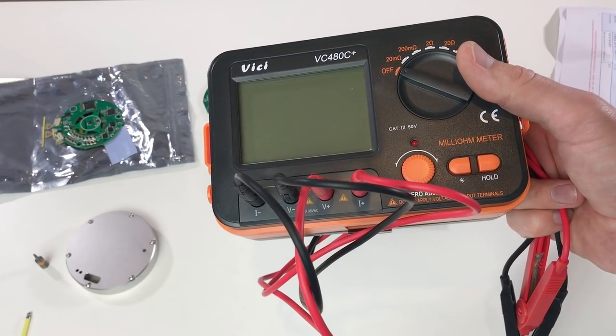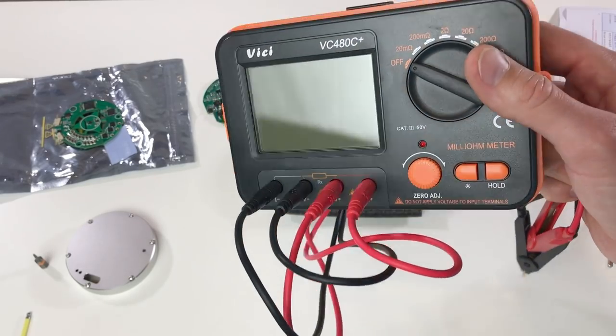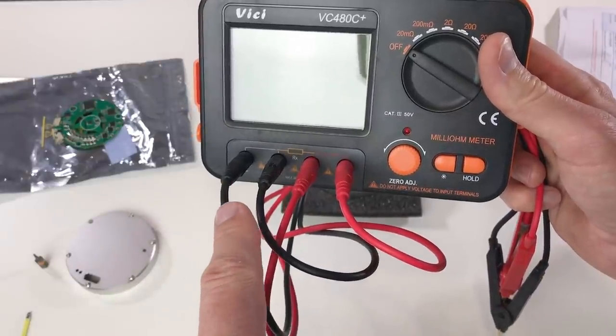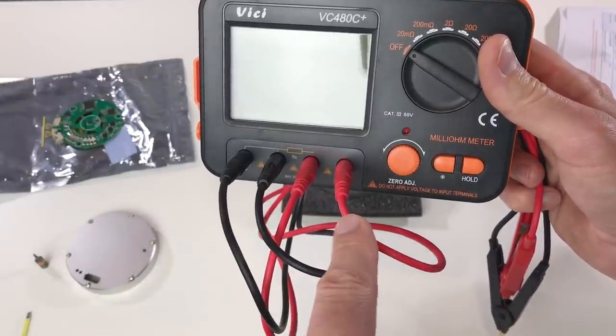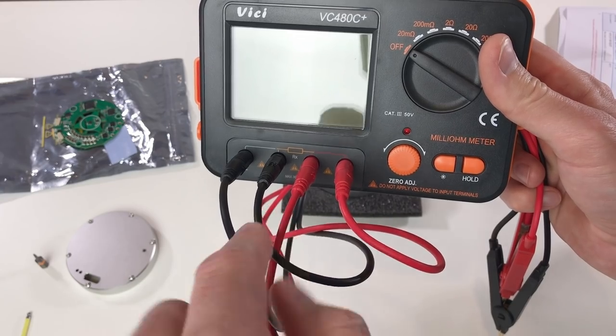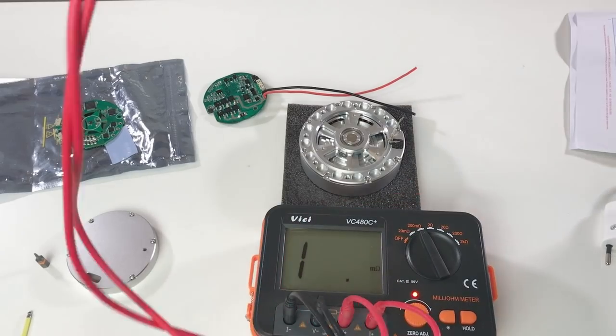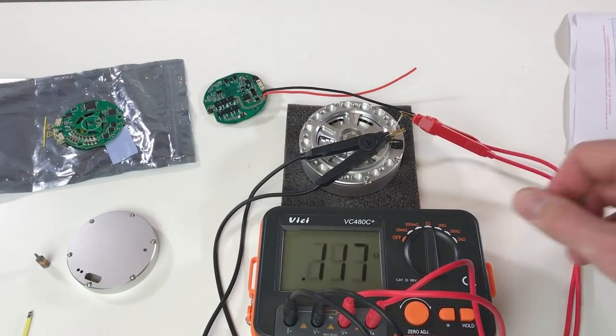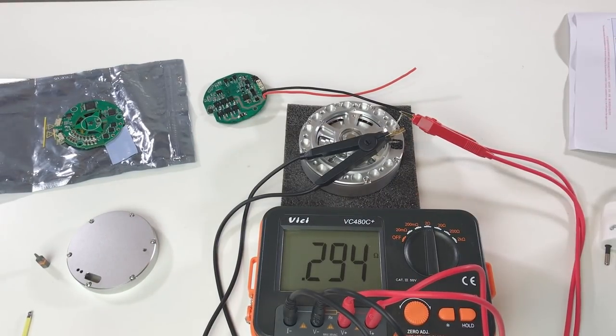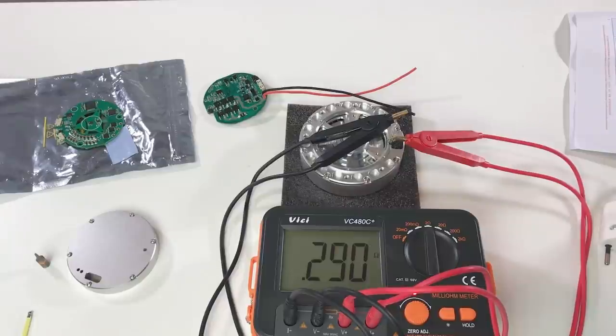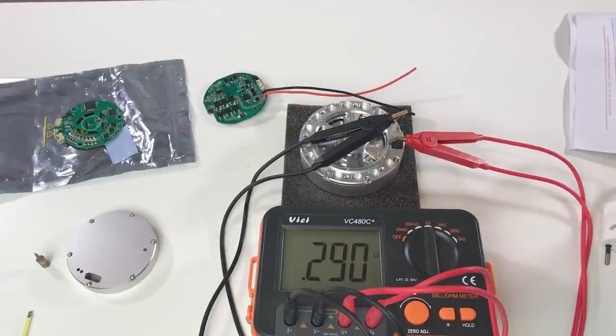In order to measure the resistance of the windings I have this device. This device measures the resistance by passing a certain current through this resistance and measuring the voltage drop on this resistance. 0.29 ohm, 0.29 ohm, 0.29 ohm. Perfect.